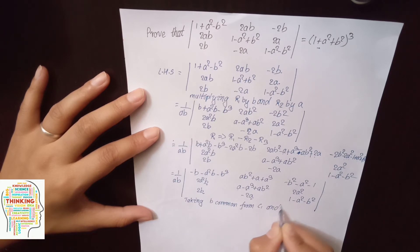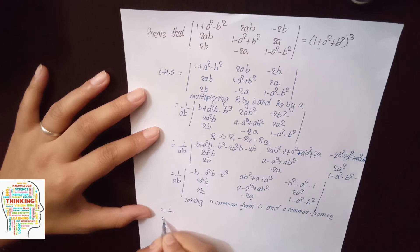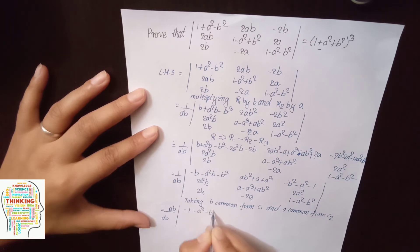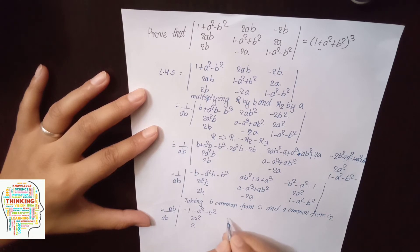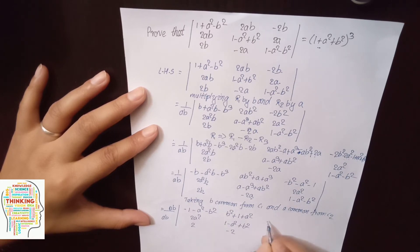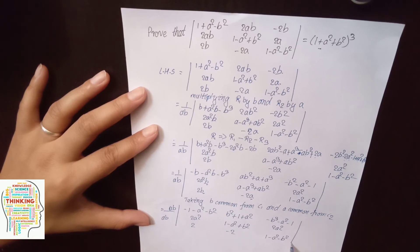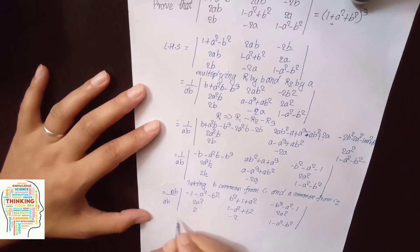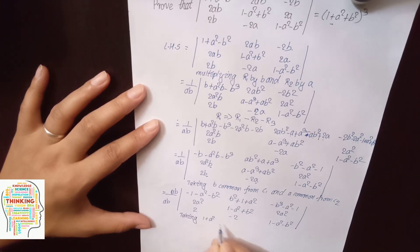Taking common from C1 and common from C2 — you got here 1/ab. The common answer: ab archive and you got here minus of a system minus 1 minus a² minus b², and 2a², 2. Taking b² plus 1 plus a² — you want to go: 1 minus a² plus b² minus 2. Taking 1 plus a² plus b² commonly from the two columns, giving (1 + a² + b²) common.